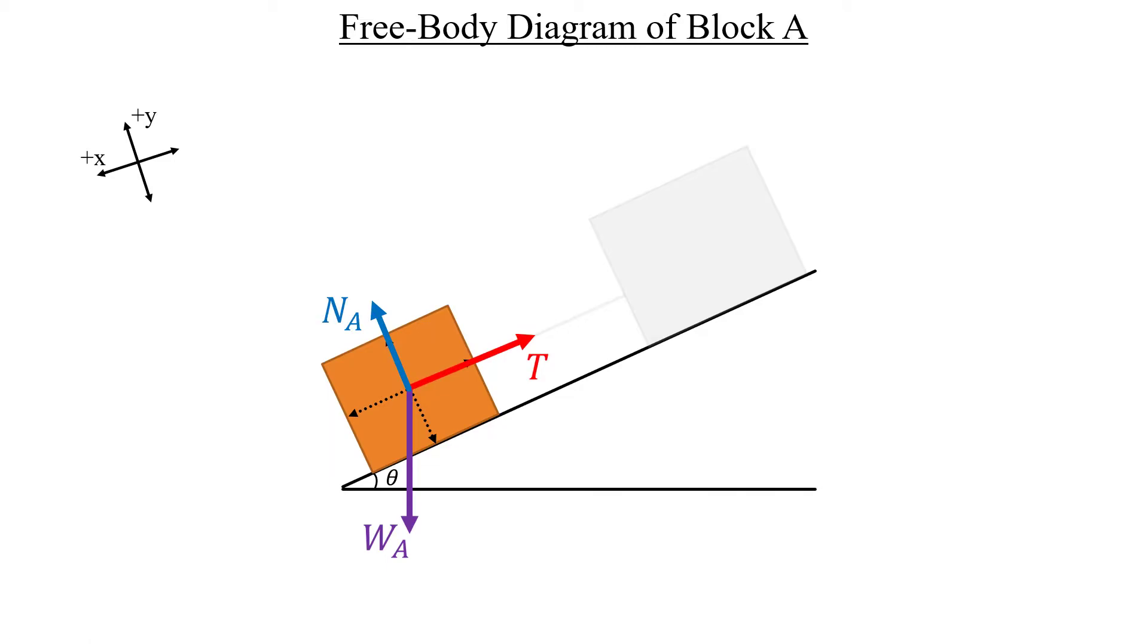In the plus y direction lies our normal force from the ramp which acts on block A. And that is it for the y-axis. Let's move on to the x. Here we can pretty easily see that tension is going to be pointing in the minus x direction because this string here is attached to the right-hand side of the block.